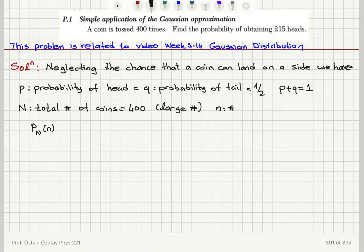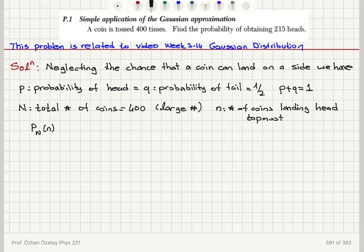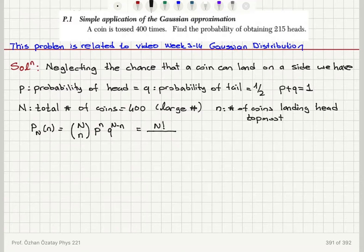Strictly speaking, the probability of getting, for capital N coins, n of them being heads — where n is the number of coins landing head topmost — is given by the binomial formula: combinations of N objects taken n at a time, times p to the n, times q to the capital N minus n.